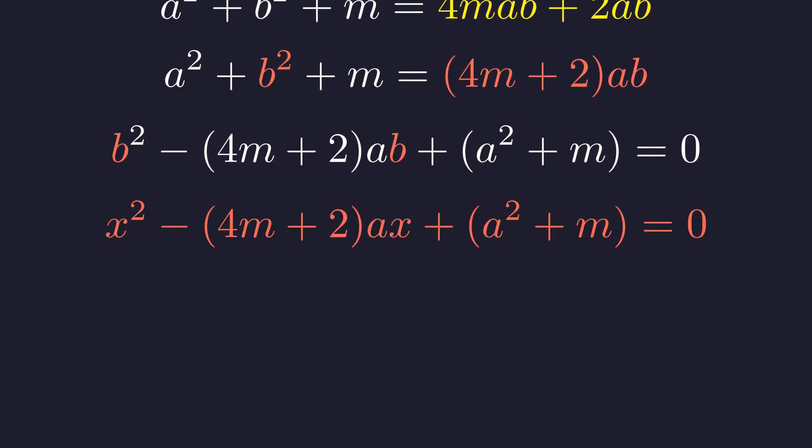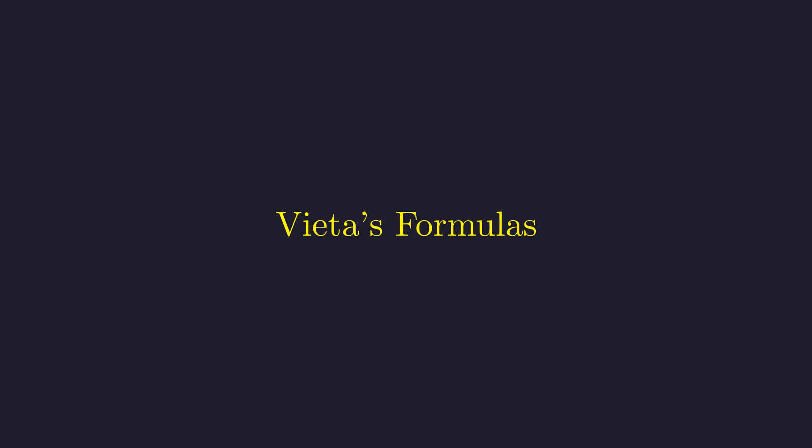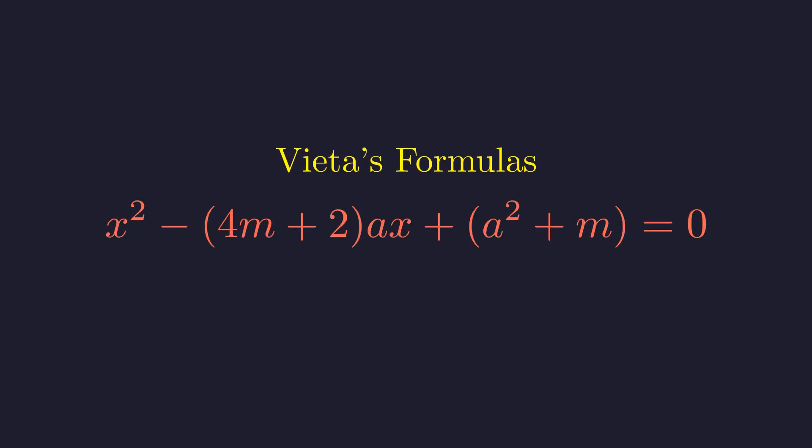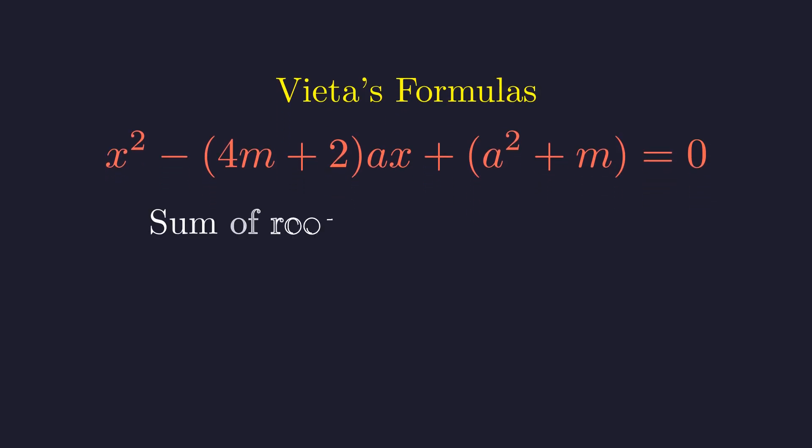We know by construction that B is one integer solution to this equation. This method, often called Vieta jumping, investigates the properties of the other solution. Vieta's formulas provide a direct relationship between the coefficients of a polynomial and the sums and products of its roots. Let us denote the two roots of this quadratic as B and B'. The sum of the roots is equal to the negative of the coefficient of the X term. Observe this sum. A and M are integers, so the right side is an integer. B is also an integer. If an integer plus B' equals an integer, then B' itself must be an integer. This is a crucial detail.